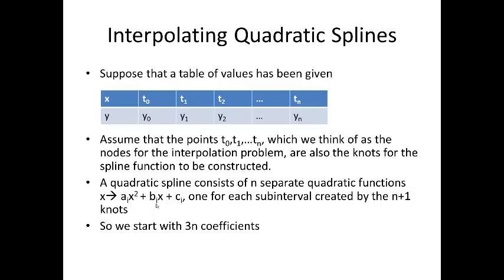So, suppose that we have a table of values. This should look familiar from interpolation theory, and the first order splines, and assume that the points t0, t1, tn, which we think of as nodes for the interpolation problem, are also the knots of the spline function to be constructed. Later, we'll do another quadratic spline interpolant, in which the nodes for interpolation are different from the knots. Quadratic splines consists of n separate quadratic functions, x, which are quadratic, so you have ai x² + bi x + ci, one for each subinterval created by the n plus 1 knots. So, we actually have 3n coefficients here.